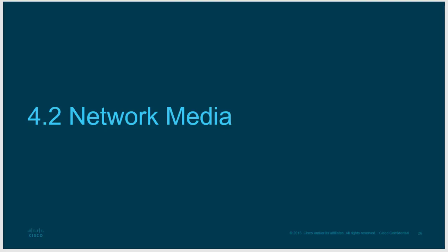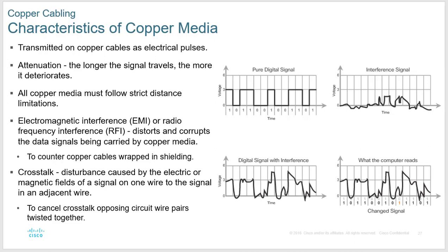Copper is the most common type of network media — specifically copper ethernet cable. It uses pulses of electricity, and attenuation means the longer electricity travels, the more it deteriorates. The rule of thumb is never have a cable longer than 100 meters, because after that the signal deteriorates so badly it theoretically won't work. That 100 meters is a ballpark — you might have a 110-meter cable work fine or a 90-meter one fail. Anytime you get close to 100 meters, add a hub, switch, or repeater to strengthen the signal.